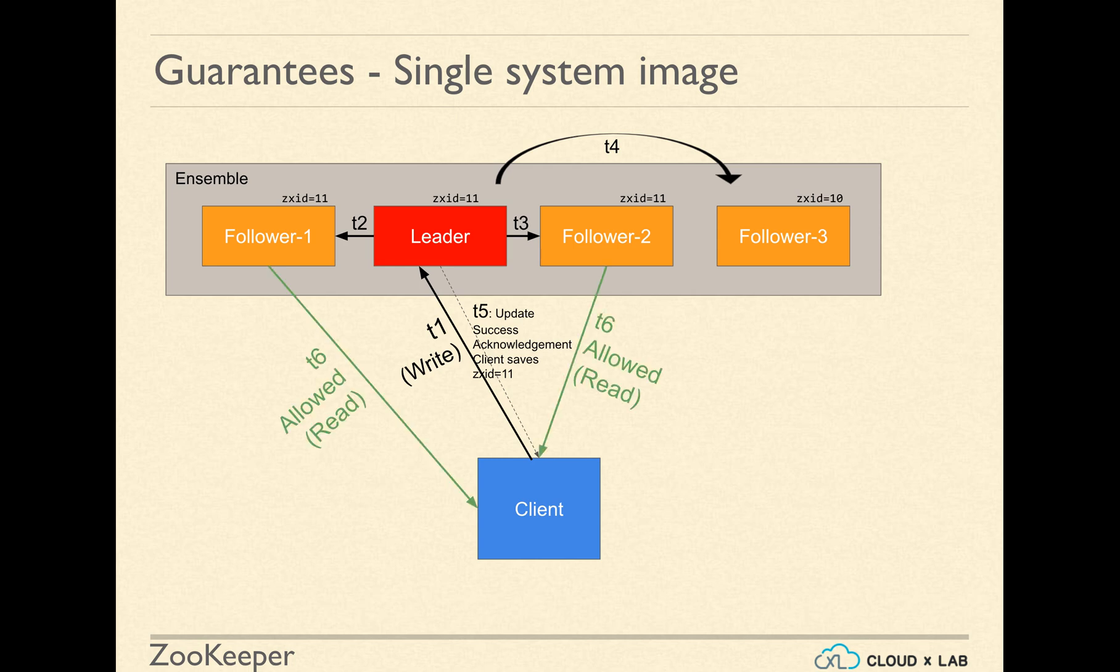At this point, the client will be allowed to read the data from Follower 1, Follower 2 or the Leader. But the client will not be allowed to read data from Follower 3 because Follower 3 is still lagging behind. Notice the ZXID equals 10 at the top of the Follower 3 block.